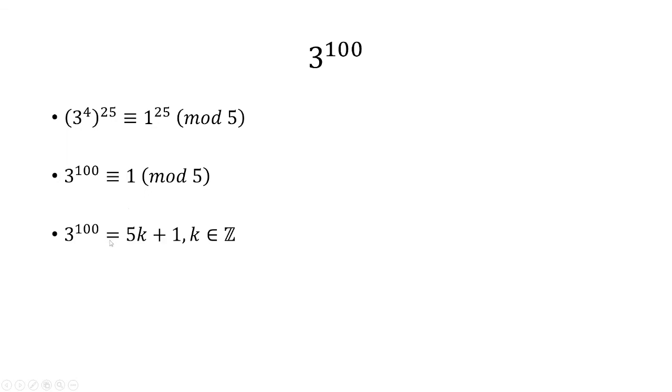This tells us that 3 to the 100th can be rewritten as a multiple of 5 plus 1. In other words, it's either going to end with a 1 or a 6.